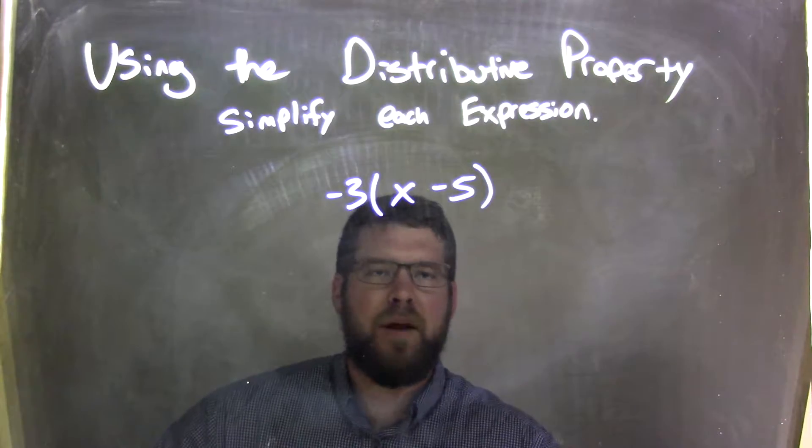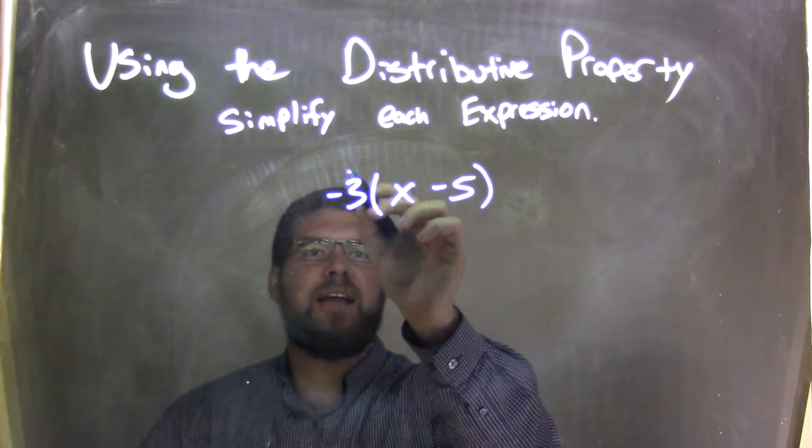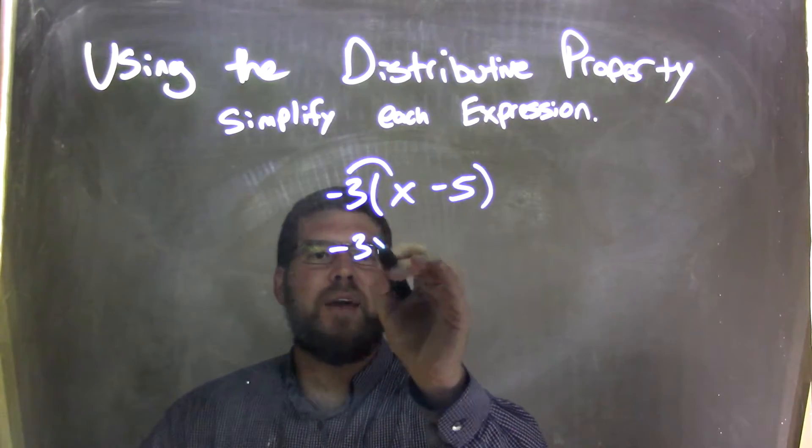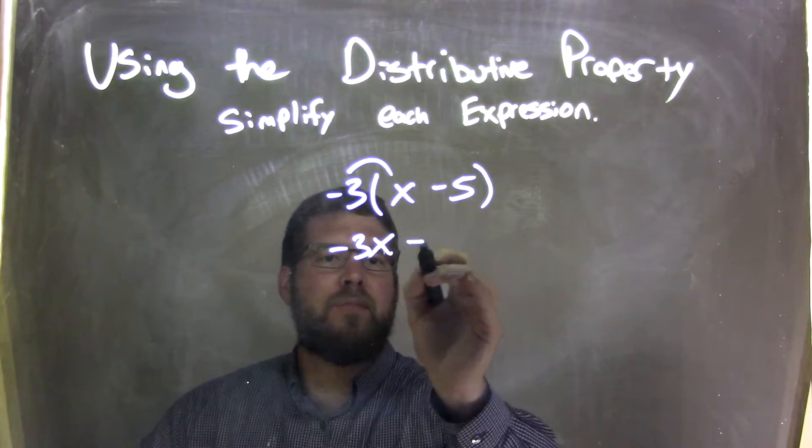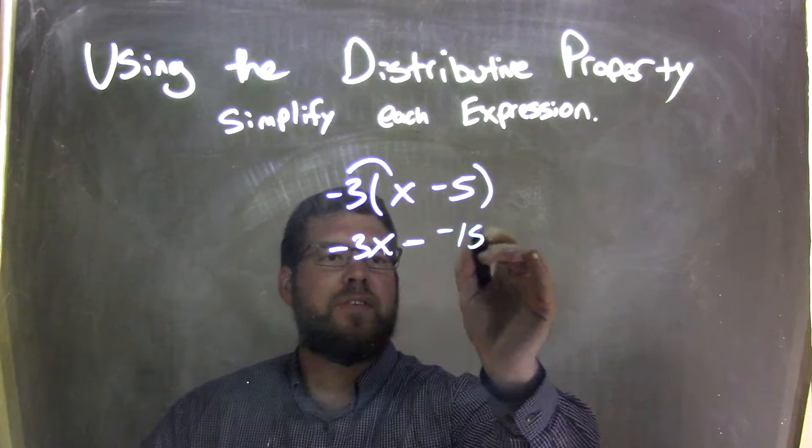Well, negative 3 times x minus 5, we need to distribute the negative 3 first, multiplication. So negative 3 times x is negative 3x, and then we bring down this minus sign, and negative 3 times 5 is a negative 15.